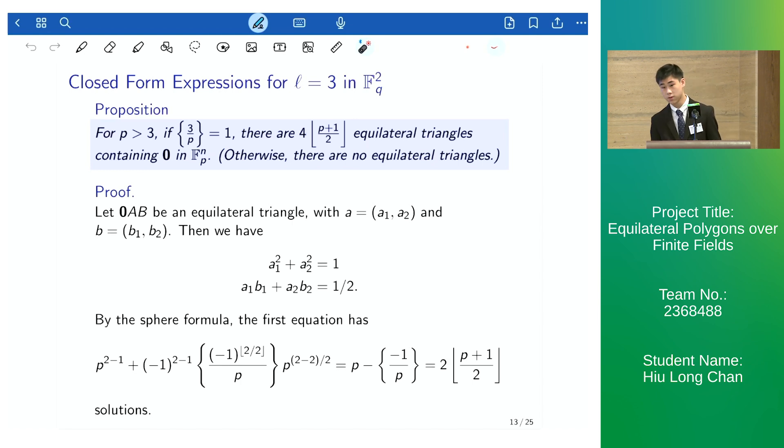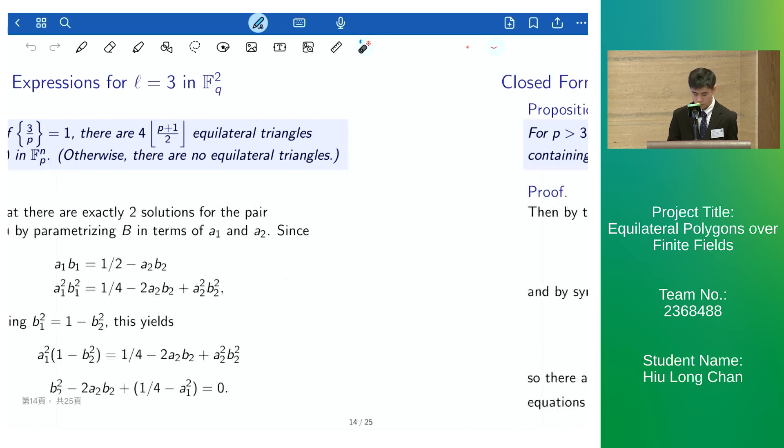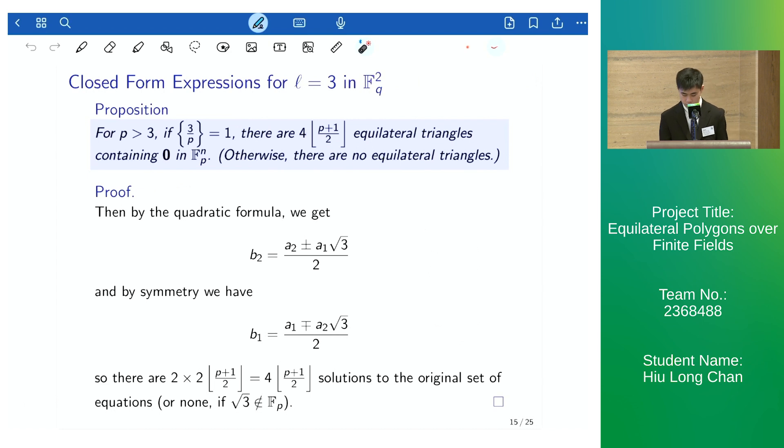We use the sphere formula to calculate the number of points on the circle. And then we parametrize one point in terms of the other. So we have this equation in terms of b_2. And then by the quadratic formula, we get two solutions.